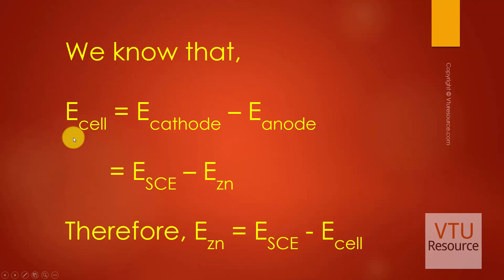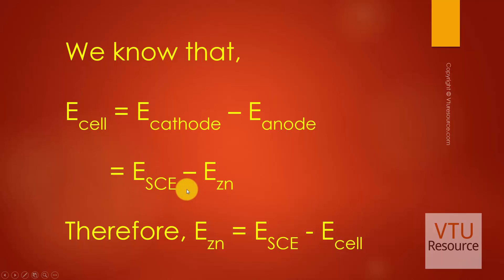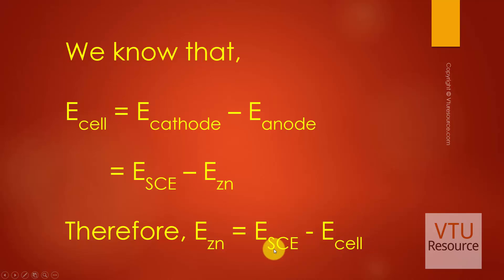As we know, EMF or cell potential is given by E_cathode minus E_anode. Here the cathode is the Calomel electrode and the anode is the zinc electrode. Substituting, the equation becomes: E_cell = E_standard Calomel electrode − E_zinc. Rearranging: E_zinc = E_standard Calomel electrode − E_cell. The standard Calomel electrode potential is known and constant, and E_cell has already been measured. By substituting these values, we can determine the zinc electrode potential. The same procedure can be used to determine the electrode potentials of all unknown electrodes by coupling them with the standard Calomel electrode.